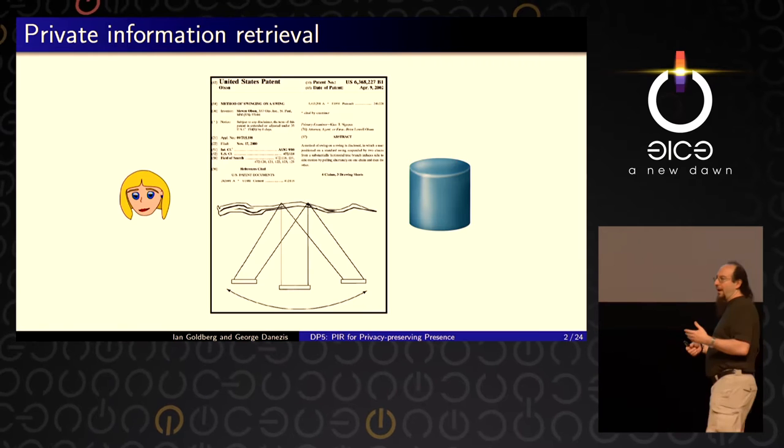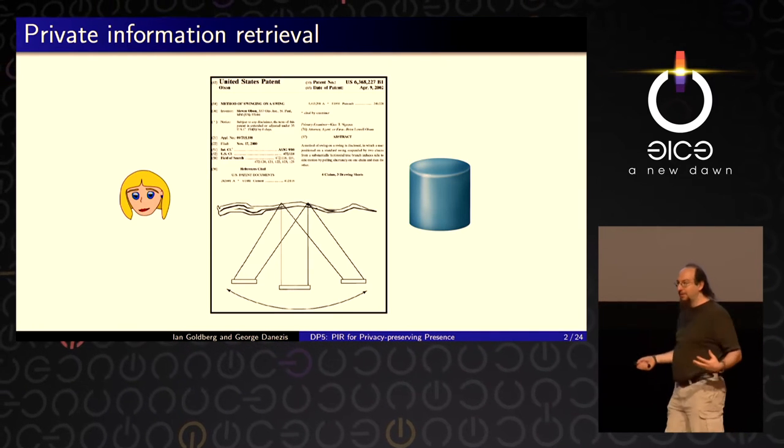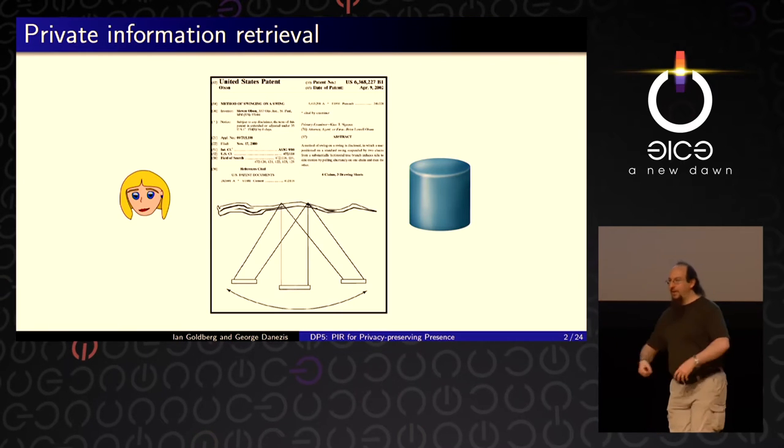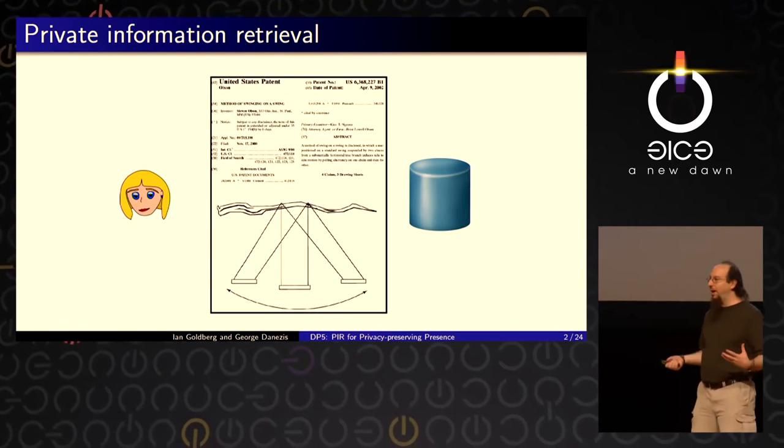Note that we're not talking about anonymity here. We're not hiding Alice's identity. What we're trying to hide is that swings are interesting — that anybody is looking up swings at all. If you want to add anonymity on top of this, you can add Tor or something like that. But you don't have to. In fact, you can have business models based on PIR that allow Alice to pay for private lookups — Alice logs in, authenticates herself, then does a private lookup and may pay for the privilege.